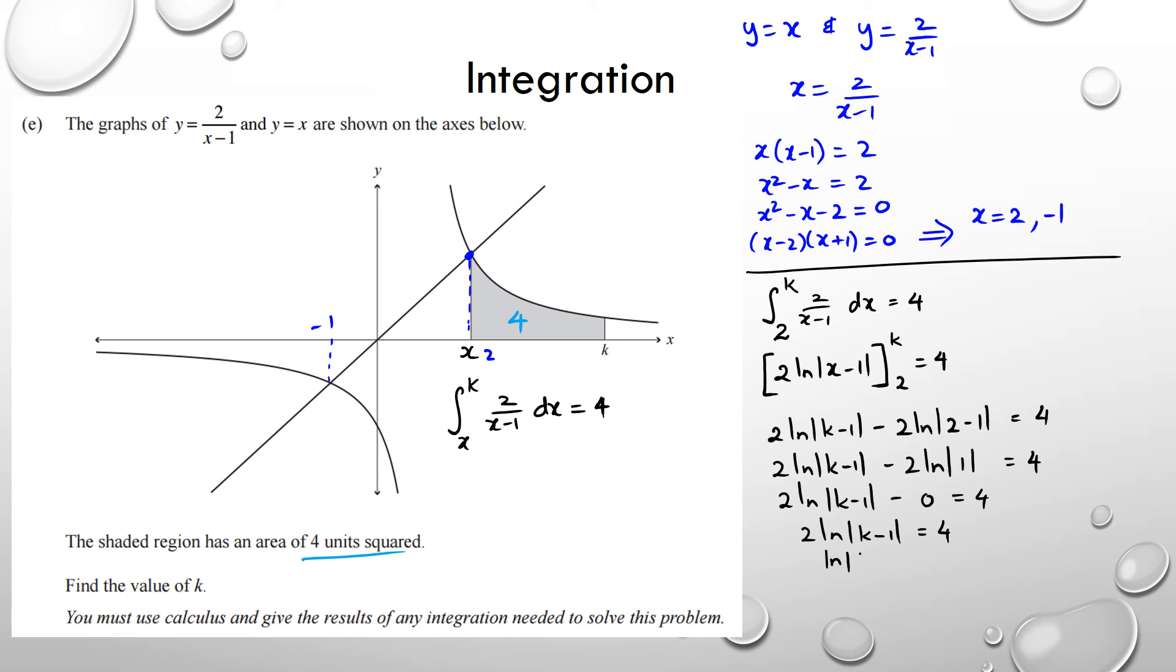I'm going to run out of space, so I'm going to try and squeeze this in, guys. Dividing by 2, so I have ln of k minus 1 equals 2. And taking to the power, getting rid of the ln, I have k minus 1 equals e to the power of 2. Therefore, k equals e to the power of 2 plus 1.